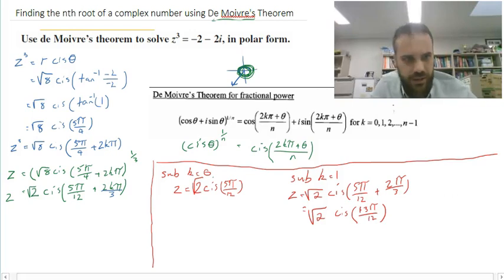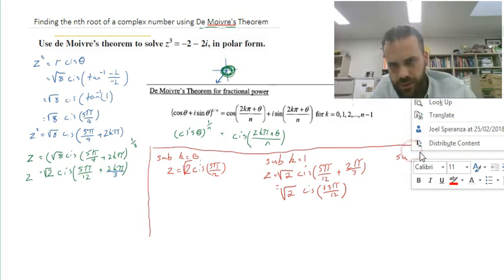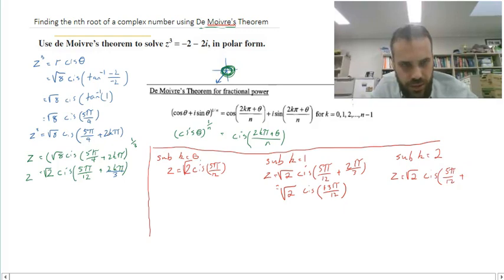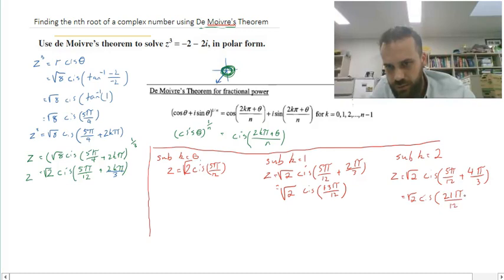And then finally, if I sub k equals 2 in here, I get z equals root 2 cis, 5 pi on 12, plus 2 times 2 times pi, so 4 pi on 3. Okay, and we can work through that. 5 pi on 12 plus 4 pi on 3, multiply that by 4, multiply that by 4, I get 16, 16 plus 5 is 21, 21 pi on 12.